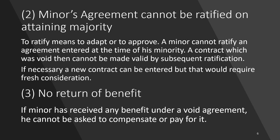Next, a minor's agreement cannot be ratified on attaining majority. To ratify means to adopt or approve. A minor cannot approve anything even after attaining majority. Whatever was done as a minor cannot be said to be 'okay' or accepted later. Any agreement with a minor is null and void. A contract which was void during minority cannot be made valid by subsequent ratification.